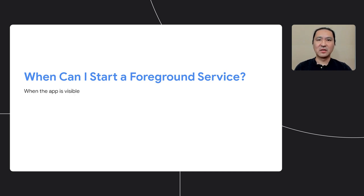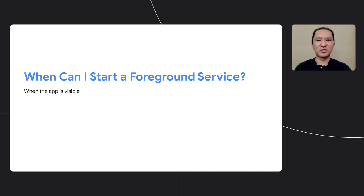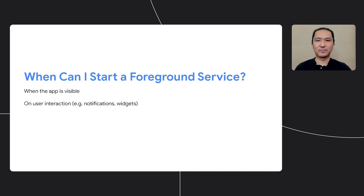Hi, I'm Makoto Oonuki on the Android Framework team. With foreground services becoming more restricted with Android 12, there are also several exemptions that remain available to you. First, when your app is visible to the user, you can start a foreground service as your app is in the foreground already. This is the same as the background activity launch restriction we introduced in Android 10. This foreground service can remain running when your app is put in the background afterwards. You can also start a foreground service on other user interactions, such as a tap on the notification or a launcher widget. In other words, you can start a foreground service as a direct response to a user interaction with your app.